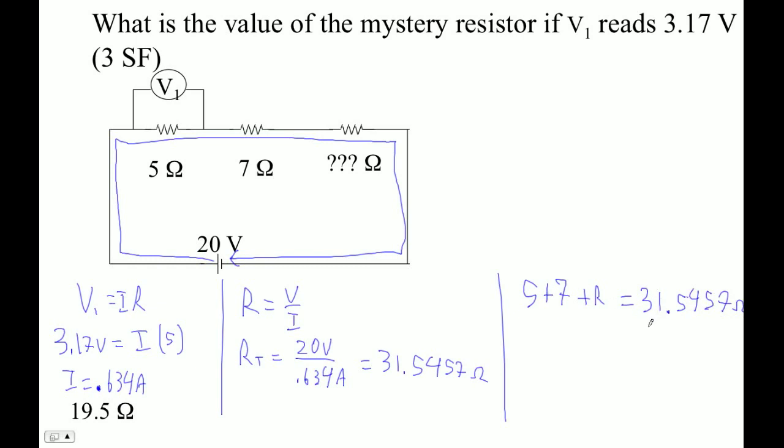So it looks like I just subtract 12 from that, right? 19.5457.